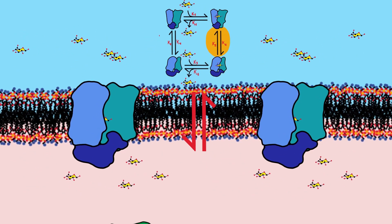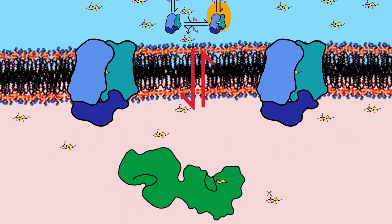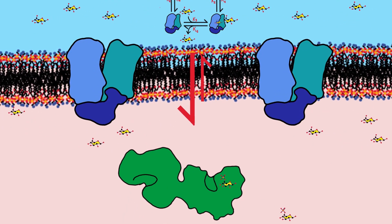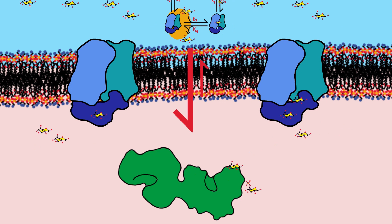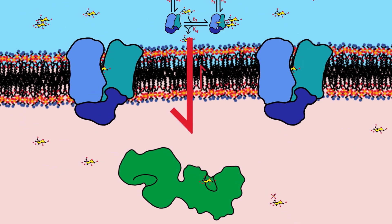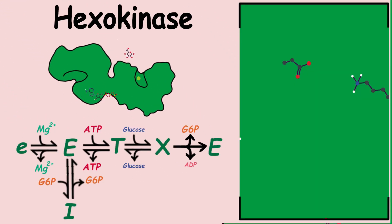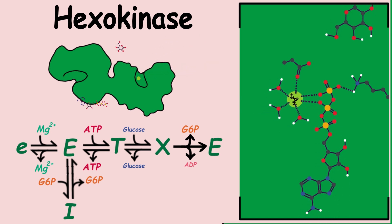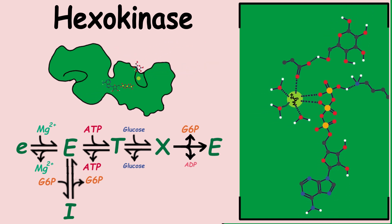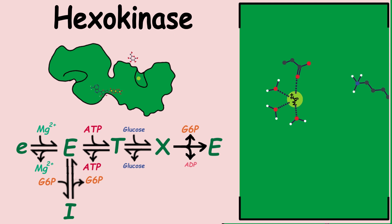The cell solves this problem by converting the glucose that enters into another molecule immediately, effectively emptying the glucose molecules inside. This reaction is carried out by the protein hexokinase. It uses an ATP to donate a phosphate to glucose, converting it into glucose-6-phosphate.